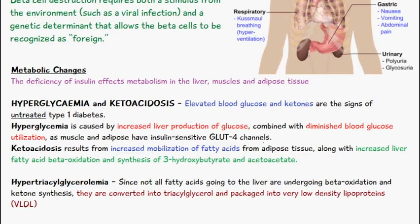We have hyperglycemia and ketoacidosis. These are the main signs of untreated type 1 diabetes because we have elevated blood glucose and ketone production. Hyperglycemia is caused by an increase in liver production of glucose, combined with a diminished blood glucose utilization.